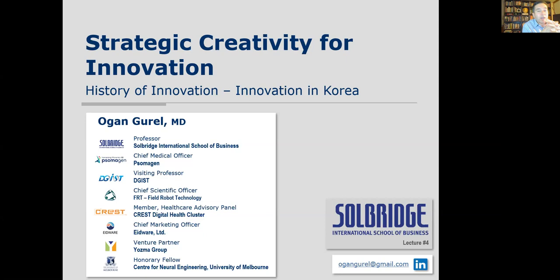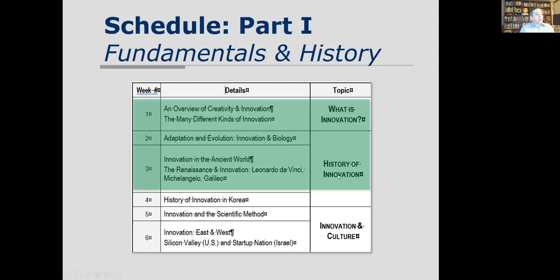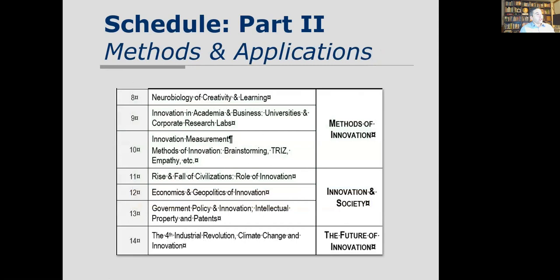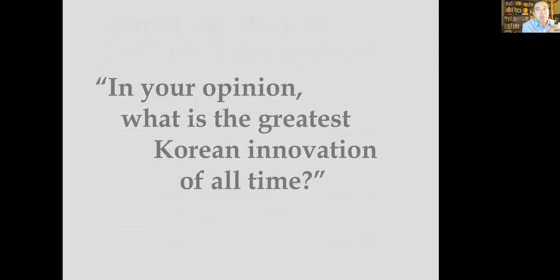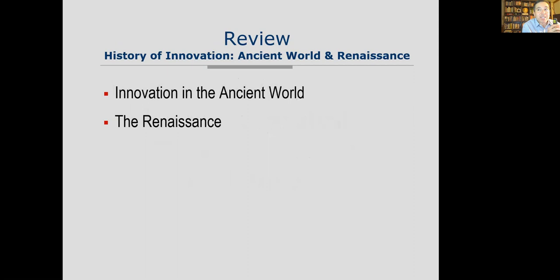Welcome again to Lecture 4: Strategic Creativity for Innovation — History of Innovation. We're going to do a little review of the course, and in the discussion session just before we had some very good answers: the smartphone, the touchscreen, the T-money card, fried chicken, the Galaxy, Hangul, and more. So let's start. We finished three lectures and are in the middle of the history of innovation, and we're going to zoom in on innovation in Korea. The second half of the course will cover methods and applications.